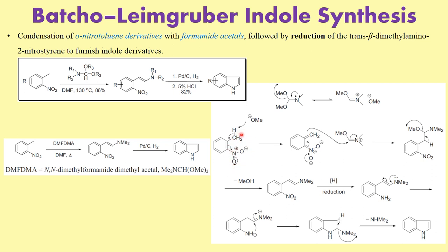The presence of the nitro group makes these hydrogens pretty acidic because the negative charge generated is resonance-stabilized — you can clearly see the whole negative charge is delocalized onto the oxygen. That is why methoxide acts as a base and abstracts this proton. The lone pair of electrons then come back, and the newly generated carbanion attacks the amine generated in the media. What you get is the formation of the condensation product, followed by elimination of methanol to give the trans-beta-dimethylamino nitrostyrene.